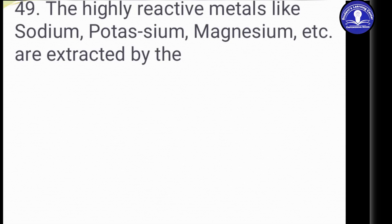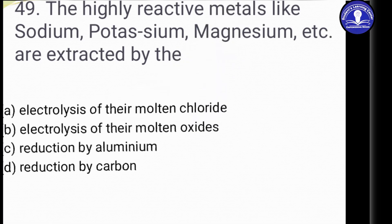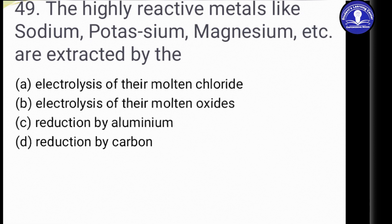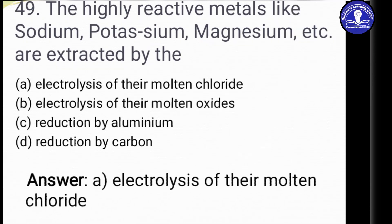Question 49: Highly reactive metals like sodium, potassium, and magnesium are extracted by which method? The options include electrolysis of their molten chlorides, electrolysis of their molten oxides, reduction by aluminum, and reduction by carbon. The answer is Option A: electrolysis of their molten chlorides. Electrolysis is the method of splitting the elements of a given compound.